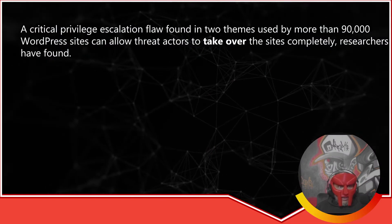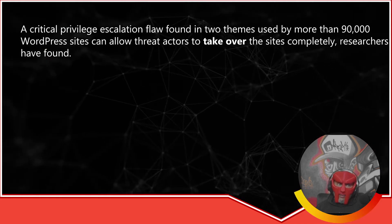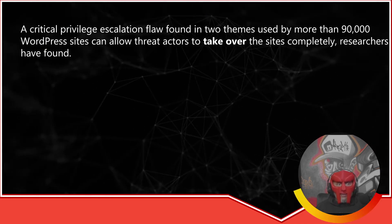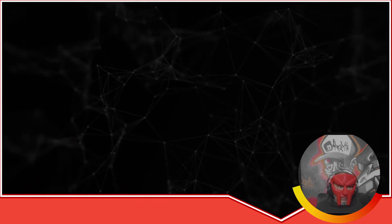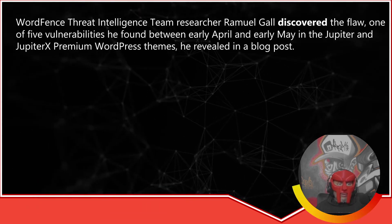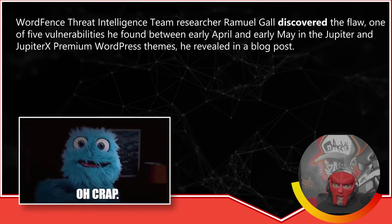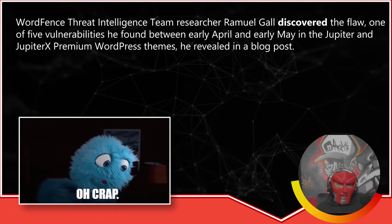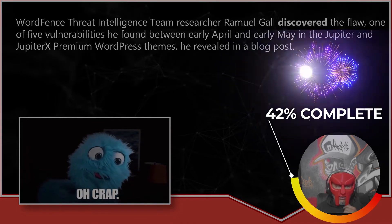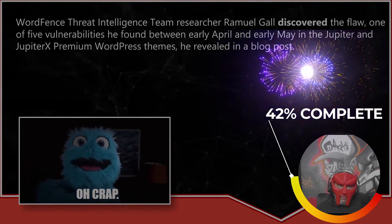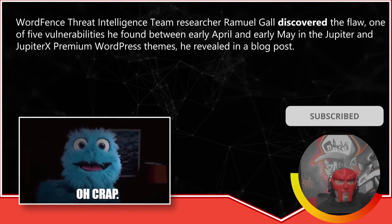A critical privilege escalation flaw was found in two themes used by more than 90,000 WordPress sites that can allow an attacker to take over the sites completely, according to researchers with WordFence. WordFence threat intelligence team researcher Romwell Gall discovered the flaw — one of five vulnerabilities he found between April and May in the Jupyter and JupyterX premium WordPress themes — and revealed it in a blog post. These are premium WordPress themes, which means they are paid for, in this case by 90,000 people.